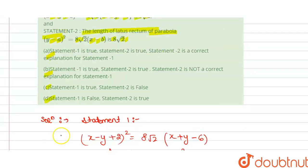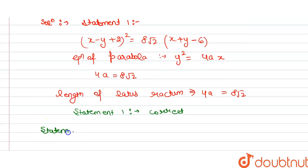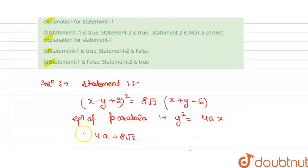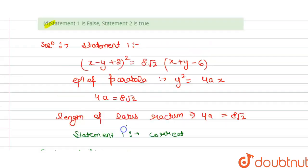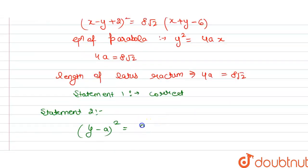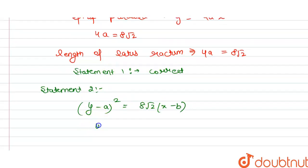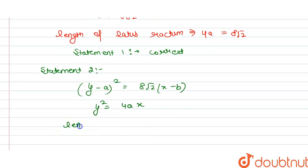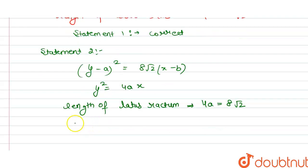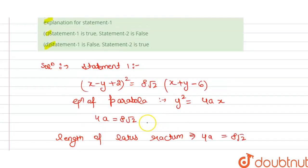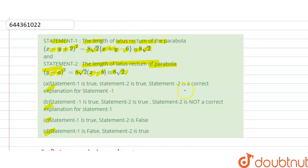Now we check Statement 2. Statement 2 is (y minus a) squared equals 8 root 2 times (x minus b). Comparing again with the standard equation of the parabola y squared equals 4a times x, the length of latus rectum is 4a, which equals 8 root 2. So Statement 2 is also true. However, Statement 2 is not the correct explanation for Statement 1, as they involve different equations.